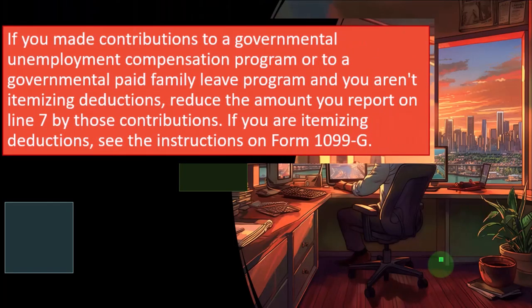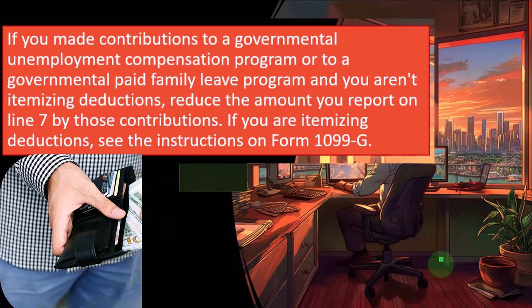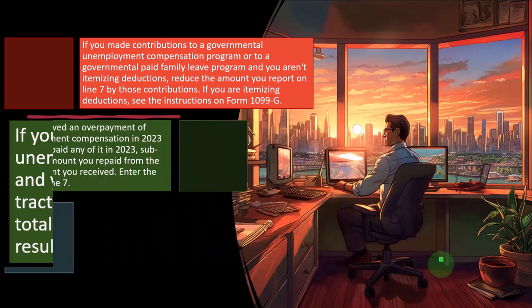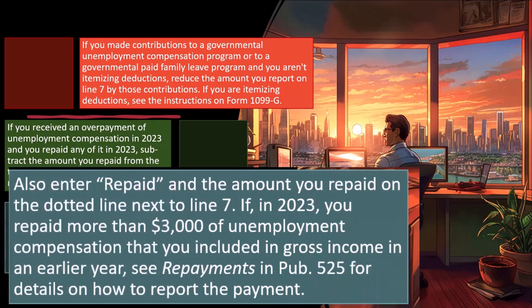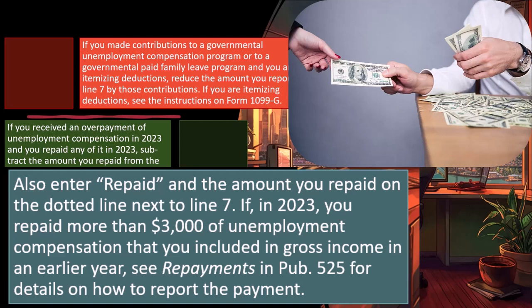If you made contributions to a governmental unemployment compensation program or a governmental paid family leave program and you aren't itemizing deductions, reduce the amount on line seven by those contributions. If you received an overpayment of unemployment compensation in 2023 and repaid any of it in 2023, subtract the amount repaid from the total received, enter the result on line seven, and also write 'repaid' and the amount on the dotted line next to line seven.